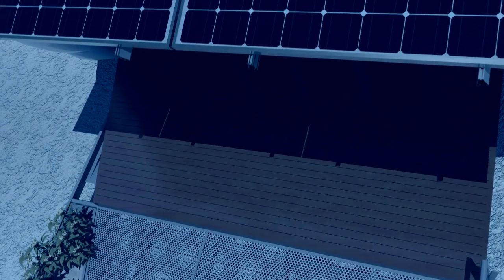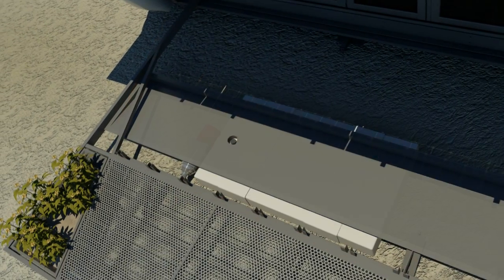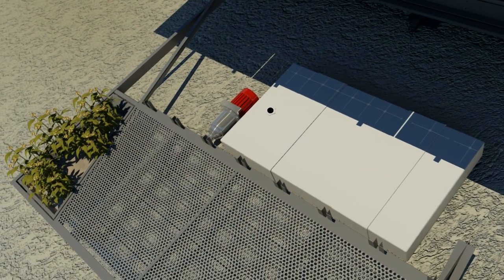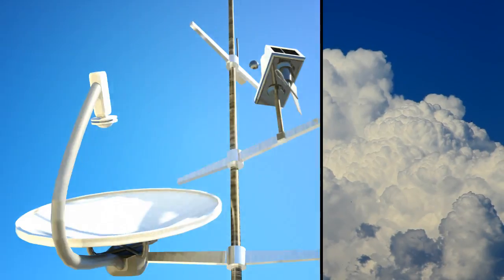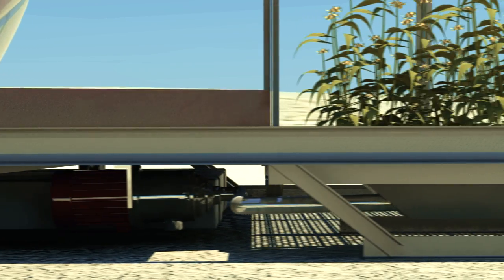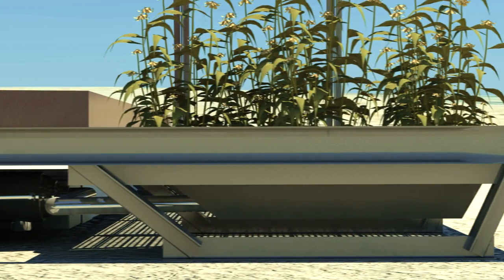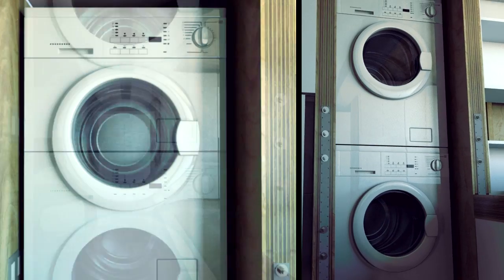When it rains, water flows down the roof and falls into a storage tank beneath the deck. We reuse the gray water from the laundry machine to water the plants as well.